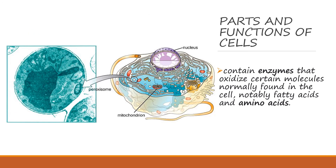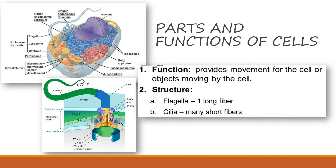We also have peroxisomes. Peroxisomes contain enzymes that oxidize certain molecules normally found in the cell, notably fatty acids and amino acids. We also have flagella. The flagella serve as the locomotion of the cell, providing movement for the cell or objects moving by the cell. If it has a long fiber, it is flagella; if it has short fibers, it is cilia.